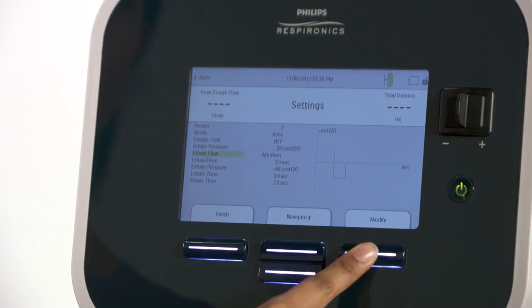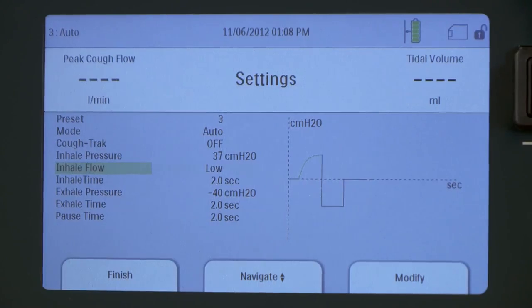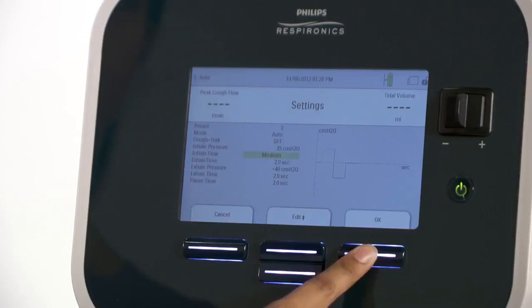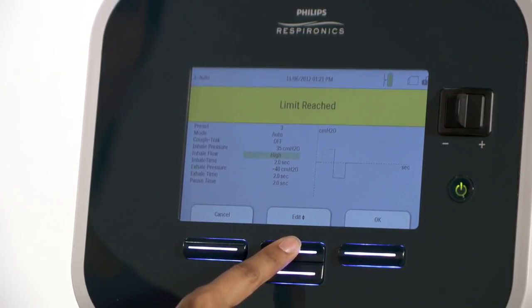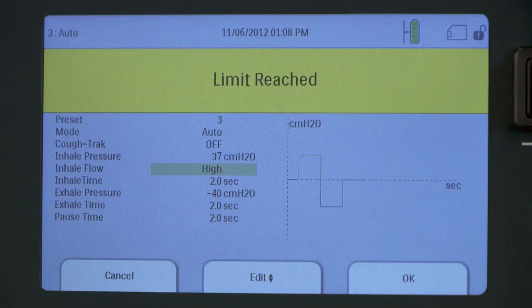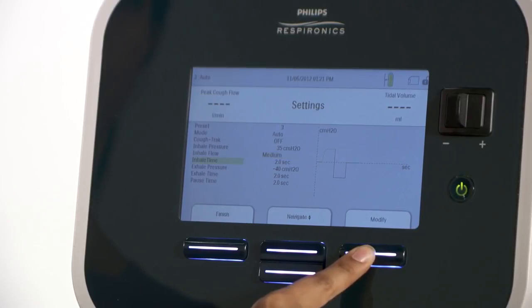Press the right button under OK. Press the right button under modify to change the next item on the list, which is inhale flow. Use the up-down edit button to adjust. If you try to change a setting beyond the available parameters, a limit reached message appears. In this case, after you have entered the correct pressure, press OK to accept the new setting.